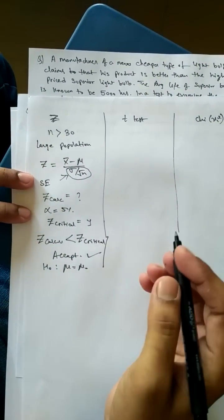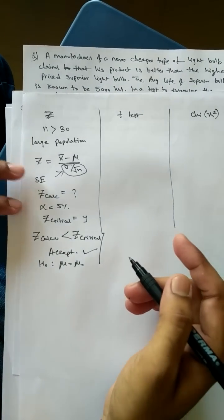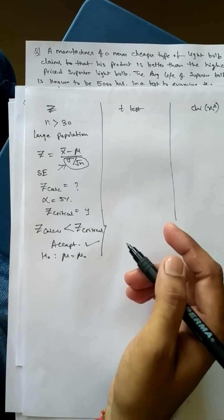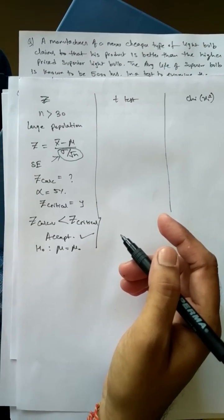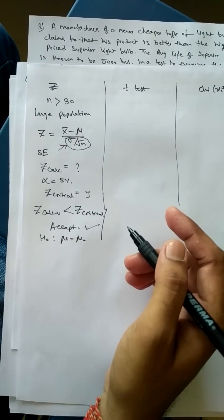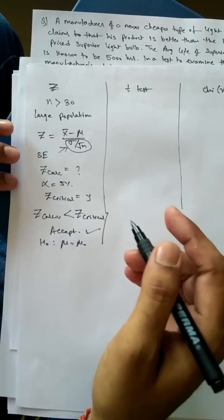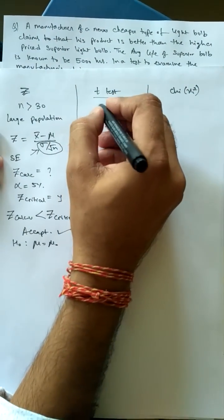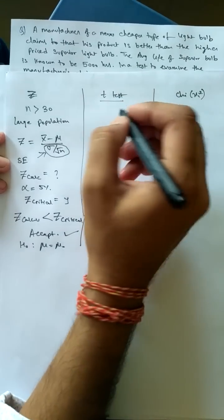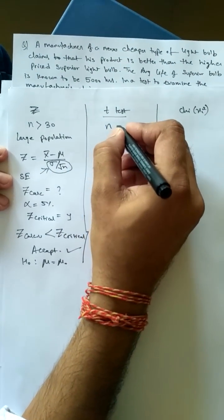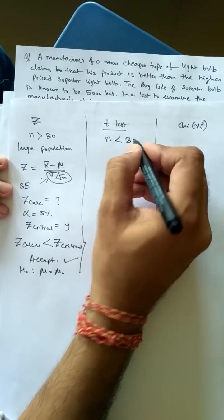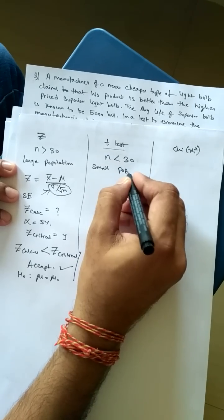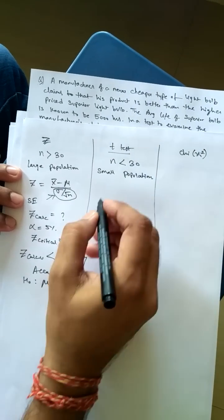In some books, the decision to use Z test or T test depends on whether the standard deviation is given or not. If standard deviation is given, we go for Z test; if it is not given, we go for T test. Also, when the sample size n is less than 30, we call it a small population and we go for a T test.